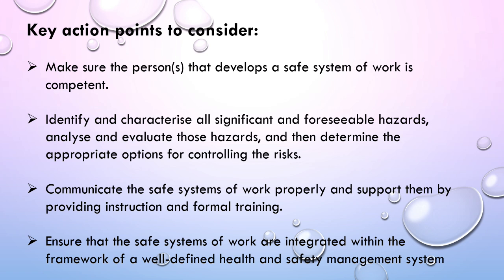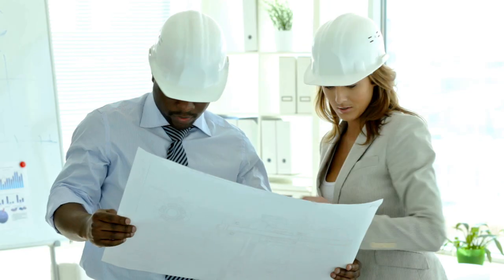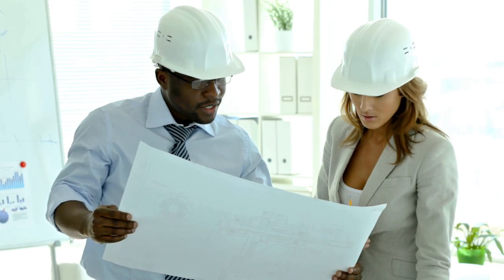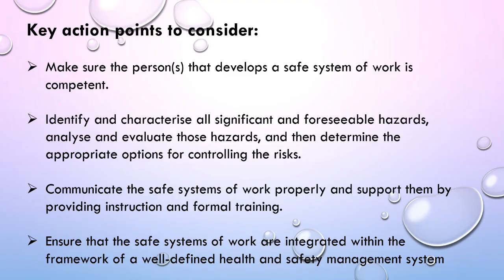The key action points to consider: you've got to make sure that the person who develops a safe system of work is competent. They have to go through training and courses to make sure they know what they are doing. You must identify and characterize all significant and foreseeable hazards, then analyze and evaluate those hazards, and determine the appropriate options for controlling the risk.